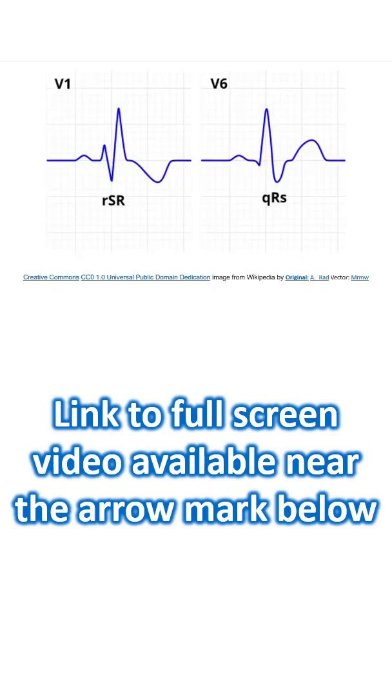This is a diagrammatic representation of ECG in V1 and V6, illustrating the features of right bundle branch block. There is an initial small r wave, then there is an s wave, and this is the hallmark, terminal slurred r prime.